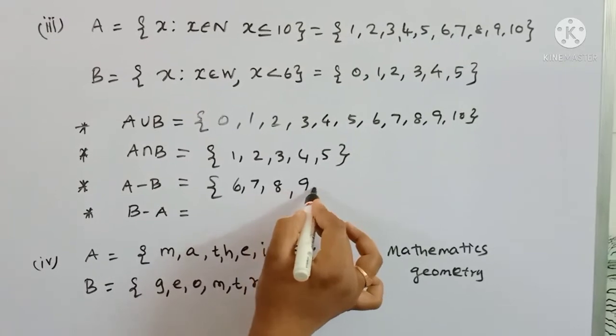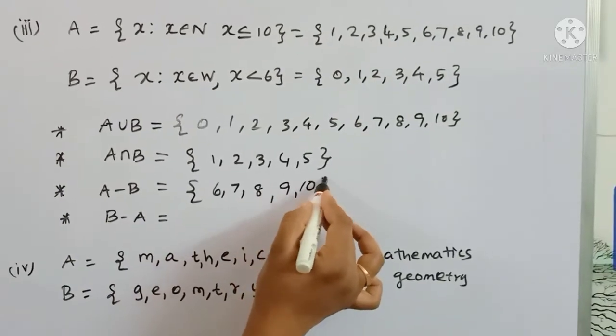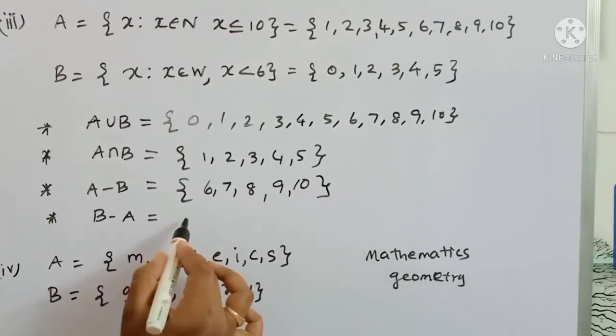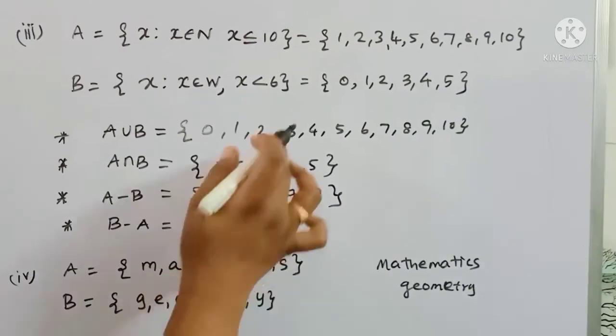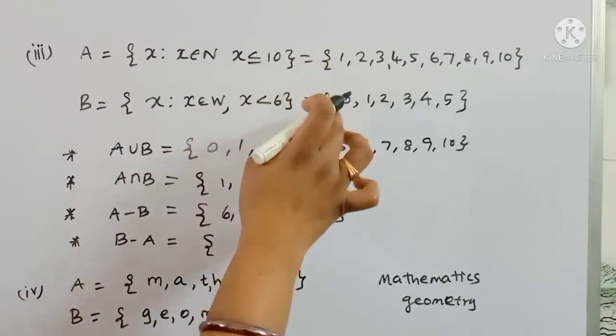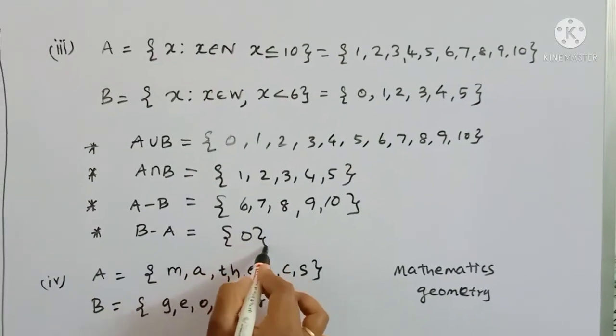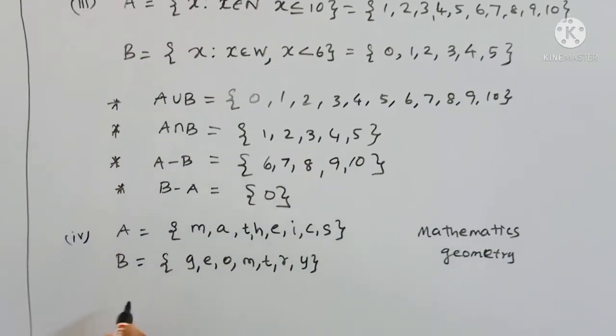B minus A: elements in B not in A. Since B = {0,1,2,3,4,5} and 0 is not in A, B minus A = {0}.